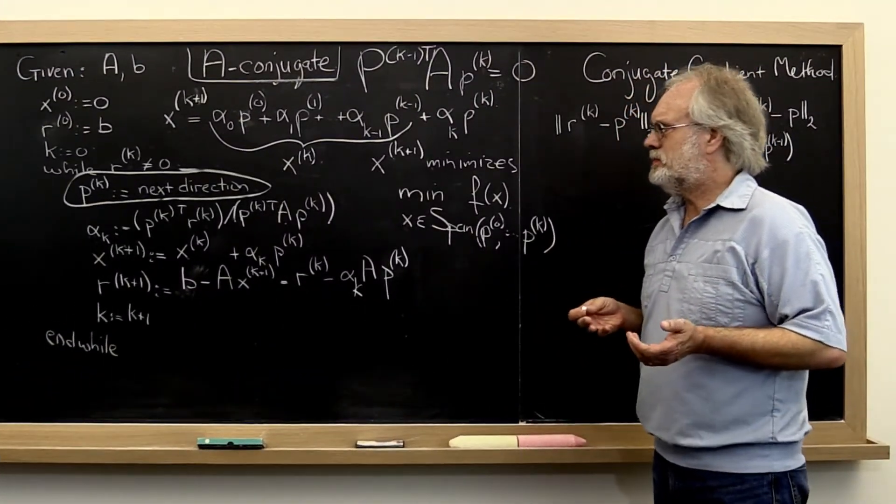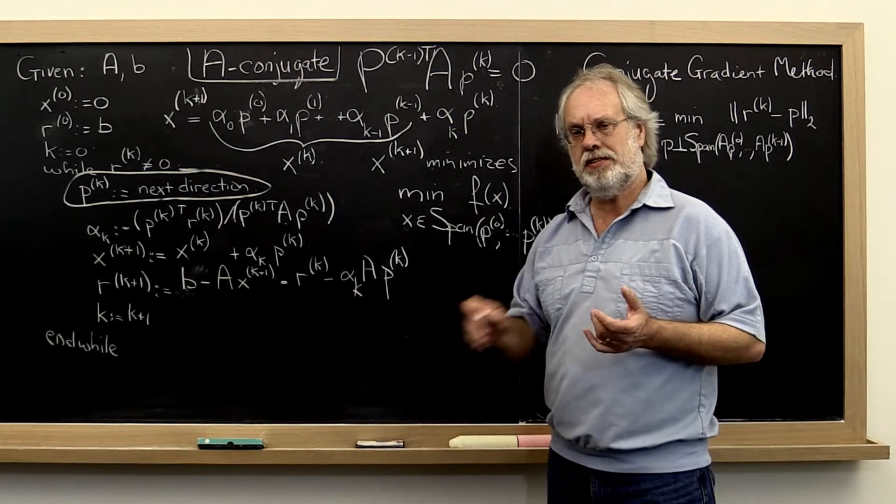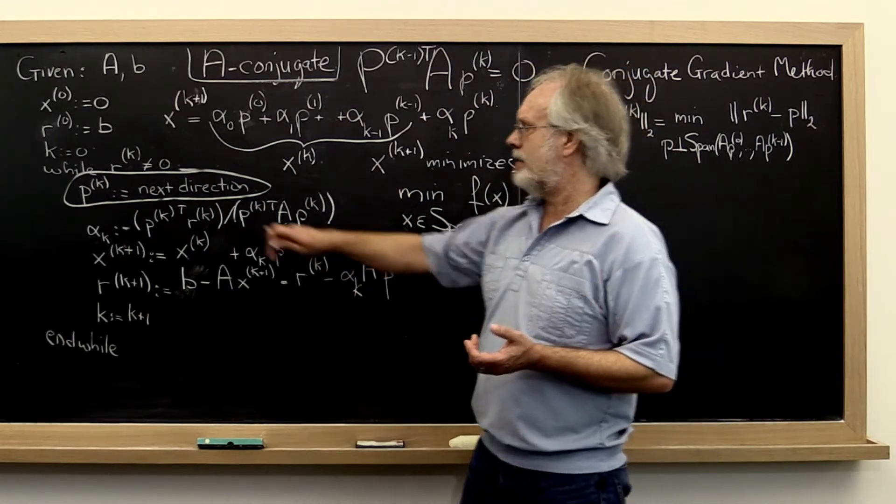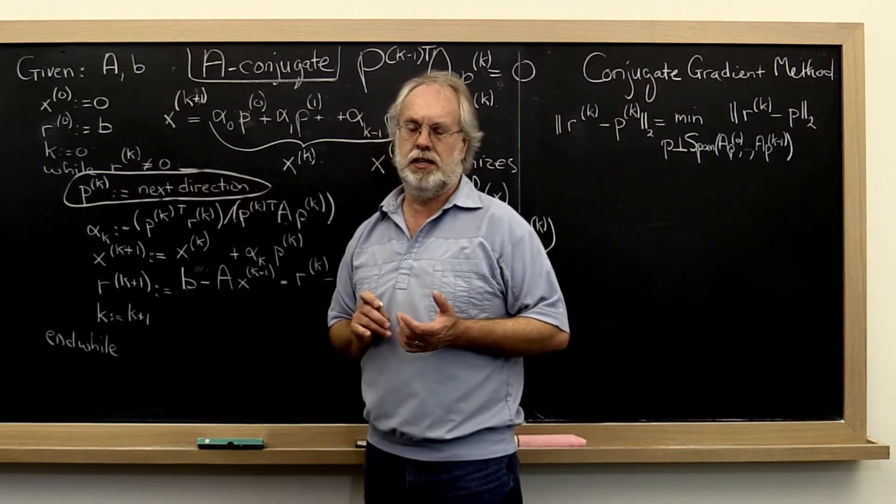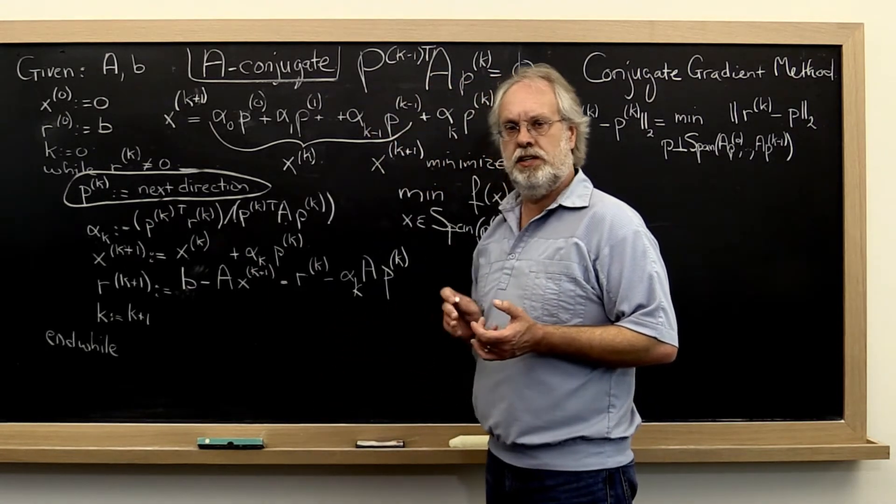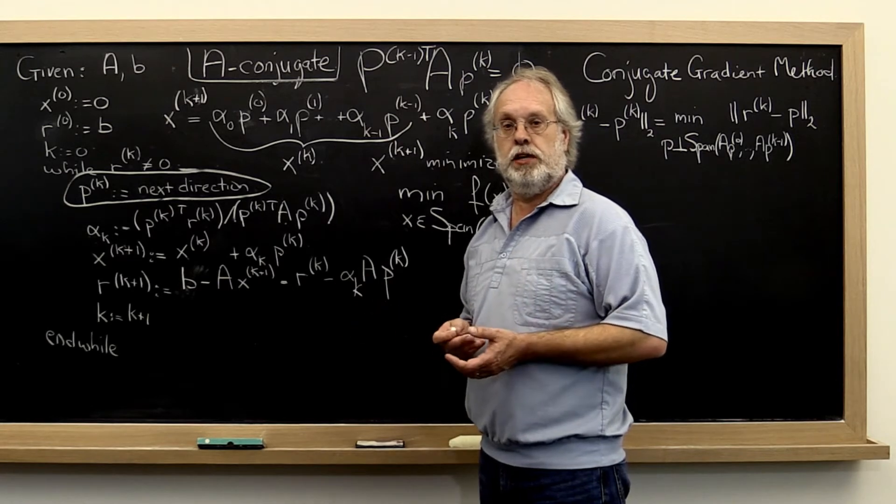Well, we already talked about how the direction of steepest descent is a wonderful direction, in part because we have it available as the residual, and in part because it's the direction in which we decrease the value of the function that we're trying to minimize the fastest.